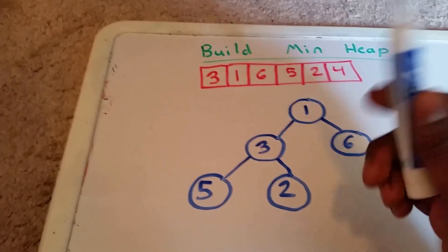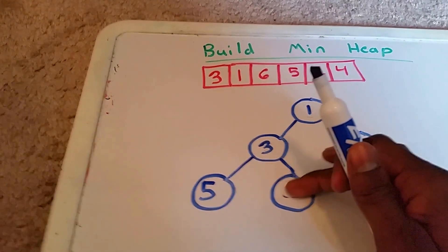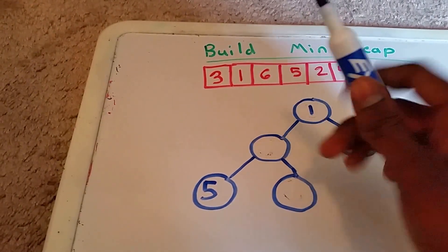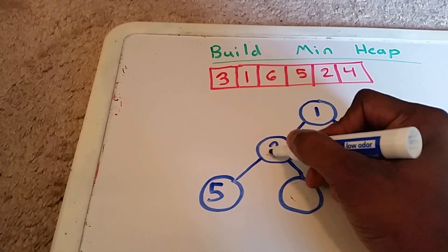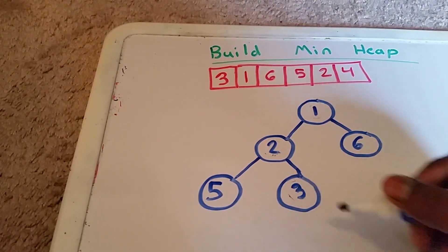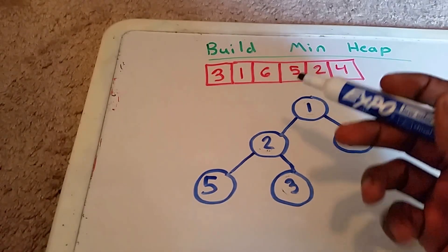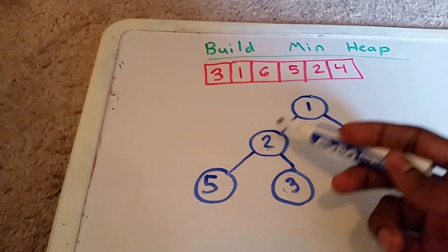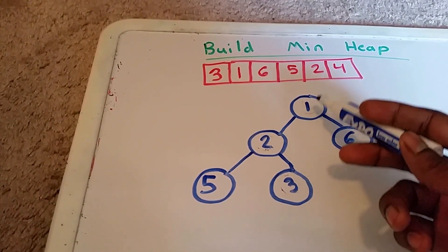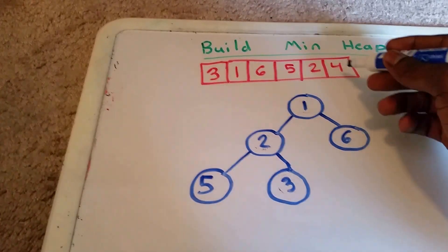We swap the 2 with the 3, so 2 goes here now and 3 goes here. And now with the 2, we have to also check with this parent, make sure that it's greater than or equal to its parent. And 2 is greater than or equal to 1, so we continue.